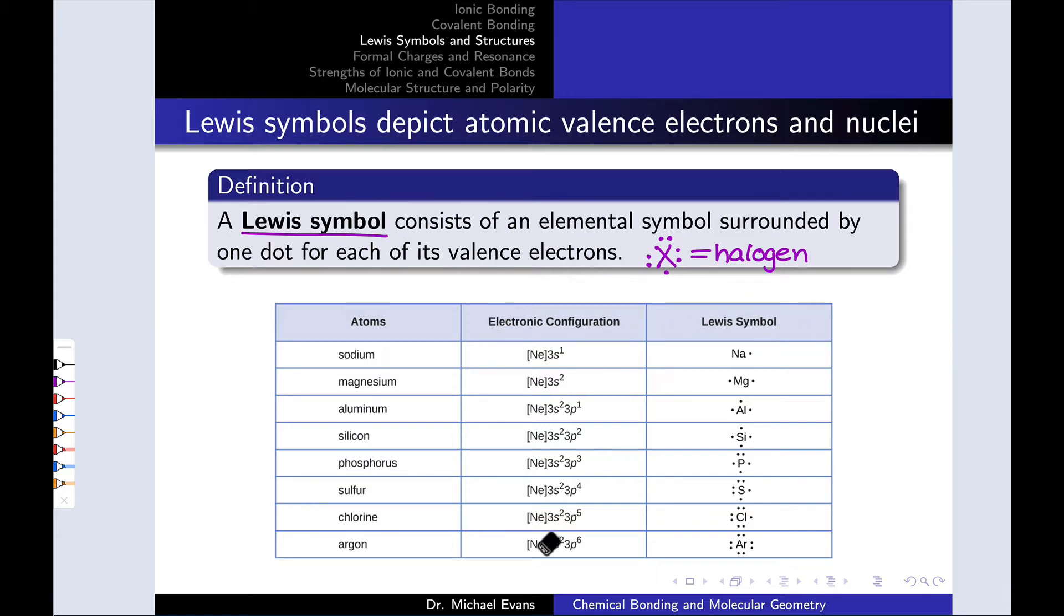This table surveys a number of different element symbols and we can write them for metals or nonmetals. For example, sodium, which has the electron configuration of neon plus a 3s1 electron, has a Lewis symbol that looks like this. The valence shell contains one electron and the Lewis symbol includes one dot.